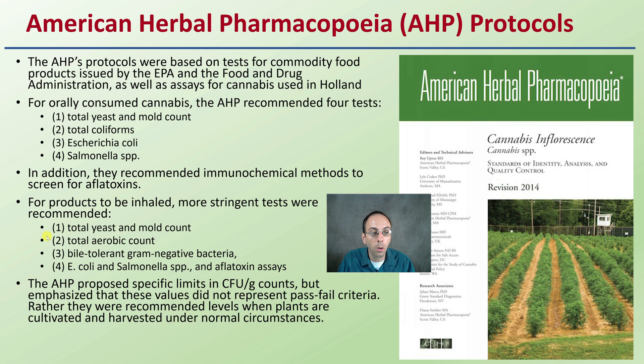For inhaled products, the AHP also recommends testing for bile-tolerant and gram-negative bacteria, E. coli, Salmonella, and aflatoxin assays. The AHP proposed specific limits in CFU — colony forming units per gram — but emphasized that these values do not represent pass-fail criteria. Rather, they are recommended levels when plants are cultivated and harvested under normal circumstances. It is important to know your local regulations regarding what they expect you to test and what levels define the pass-fail line.